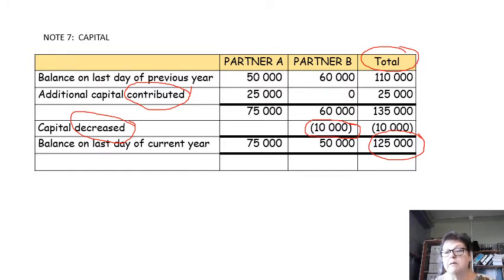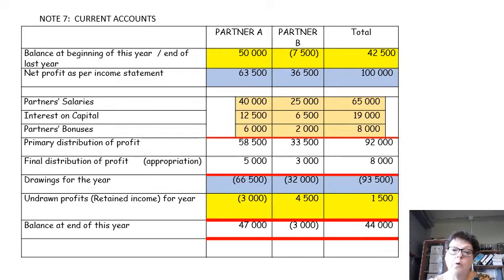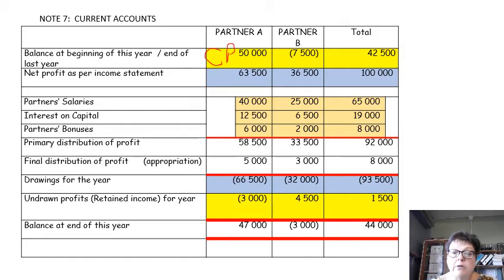The total amount is the amount that would appear inside your statement — that is the total of the two partners' capital contributions on the last day of the financial year. Now we get to Note 8, which is the note for the current account. This is the most important new note. You need a column for Partner A, Partner B, and total. You always start with the balance at the beginning of this year. If the current account has a credit balance, you write it as a positive amount — for example, that 50,000 rand indicates that this partner has an additional 50,000 rand invested in the partnership.